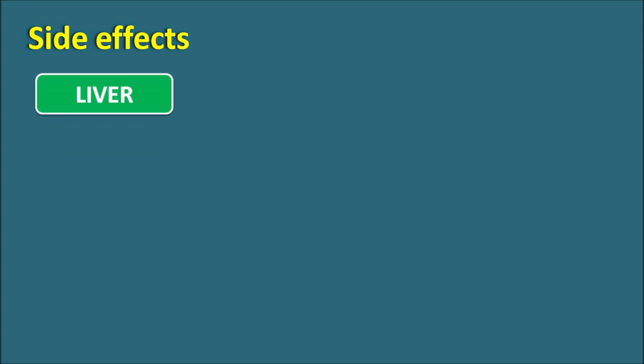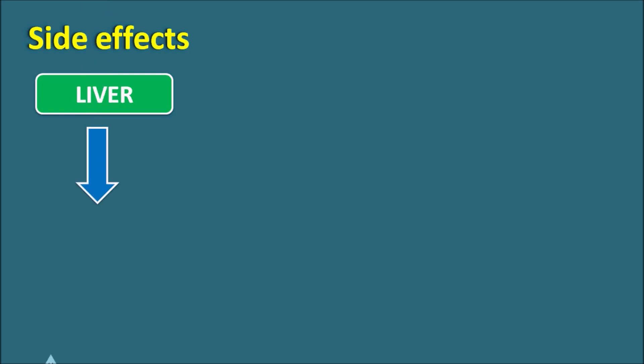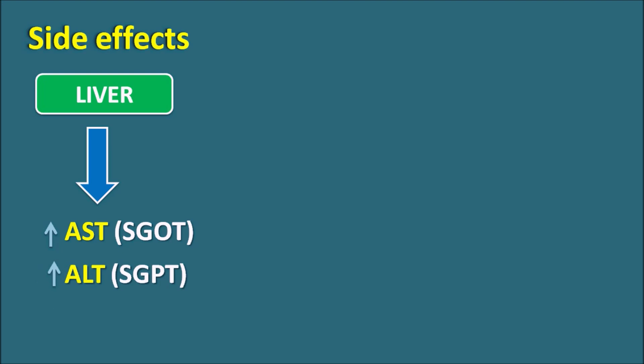One important organ affected is the liver. Phenofibrate can affect liver functionality and increase liver enzymes such as AST (aspartate transaminase, also called SGOT) and ALT (alanine transaminase, also called SGPT). These two liver enzymes indicate liver functionality, and when their levels are increased, it indicates liver impairment. Phenofibrate can increase these liver enzymes, thereby producing liver impairment.